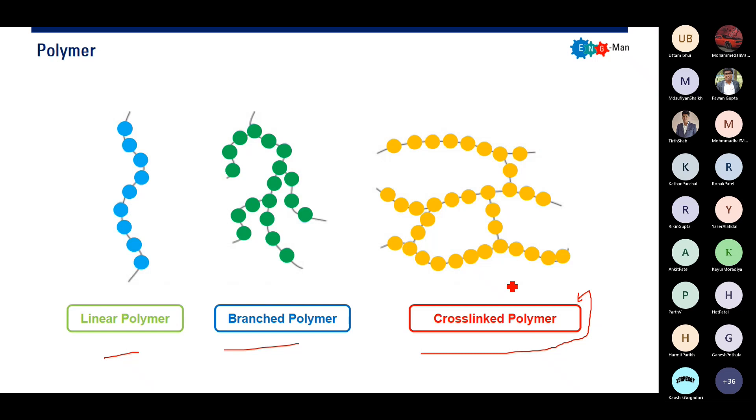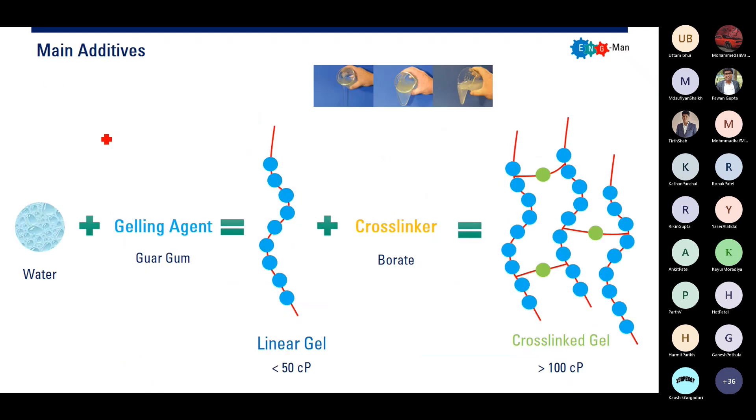How to make it? The main additive, water, use gelling agent, usually the guar gum, and it will create linear gel with viscosity usually below 50 centipoise. If you want to do a breakdown operation, usually we only use linear gel. But if we go to mini frag or main frag, we will use cross-linker. The most popular cross-linker is borate in the industry to create cross-linked gel.